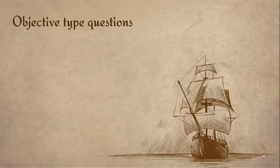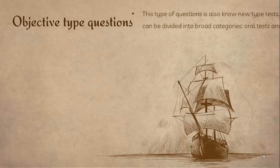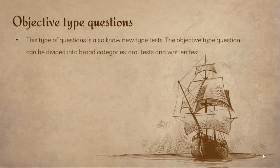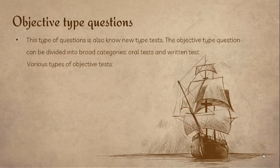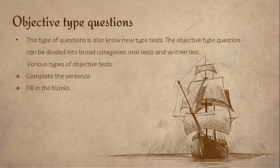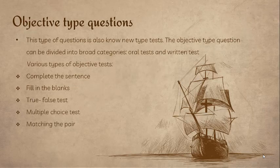Now, third: objective type questions. This type of question is not a new type of test. Objective type questions can be divided into a broad category: oral test and written test. Various types of objective tests are: complete the sentence, filling the blanks, true or false, multiple choice test, and matching the pair.